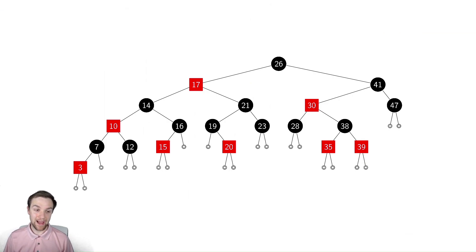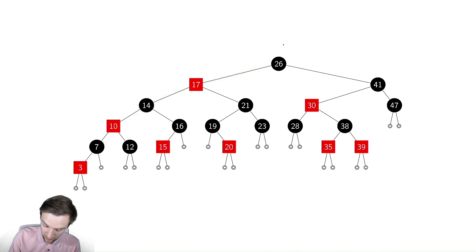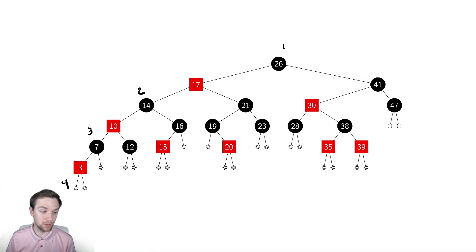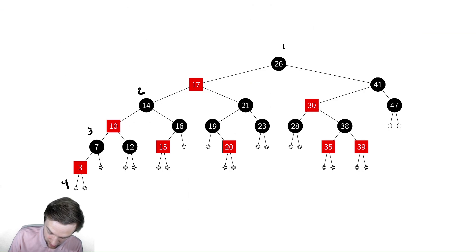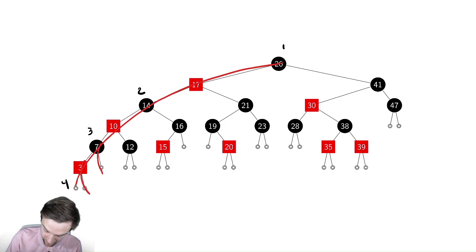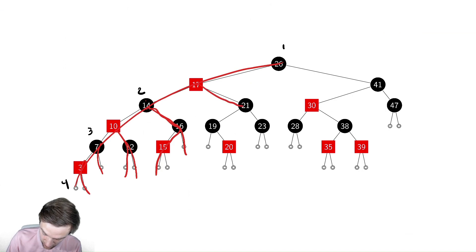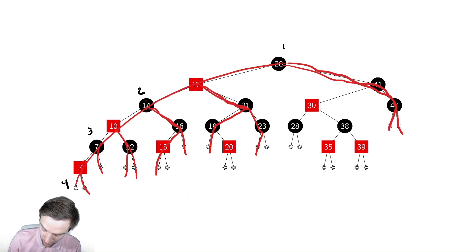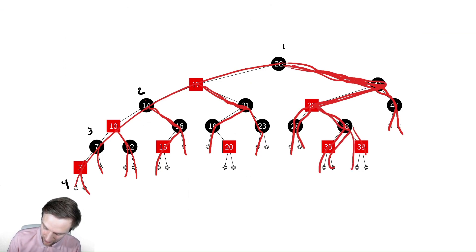Now we need to check: does every single path have the same number of black nodes? From node 26, if I go down all the way to the left, this path has one, two, three, four black nodes. All I need to do is check if there are any paths that do not have four black nodes. Checking every path in the tree, they all have one, two, three, four black nodes. Yes, all of them do.